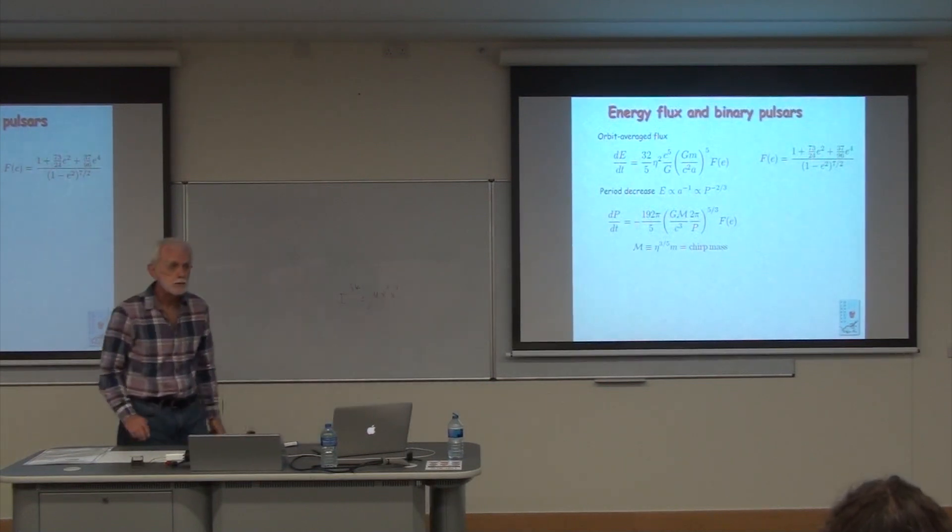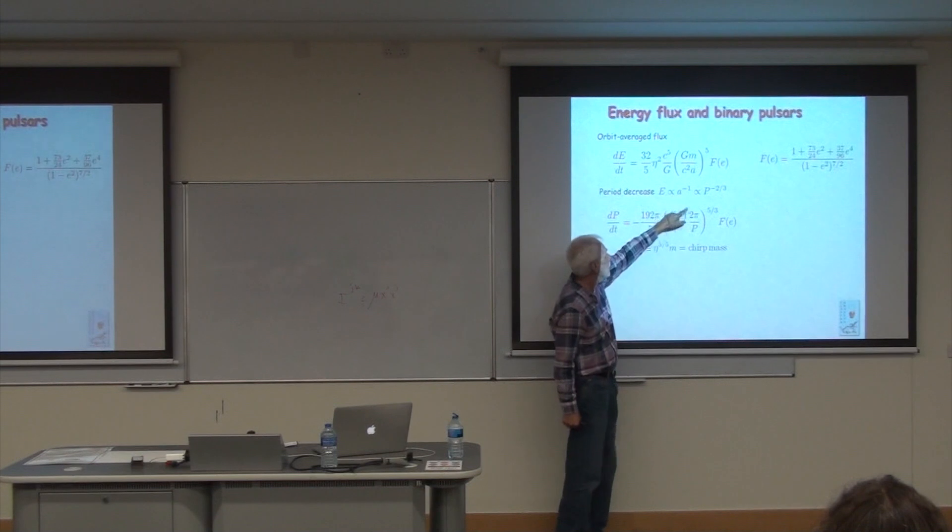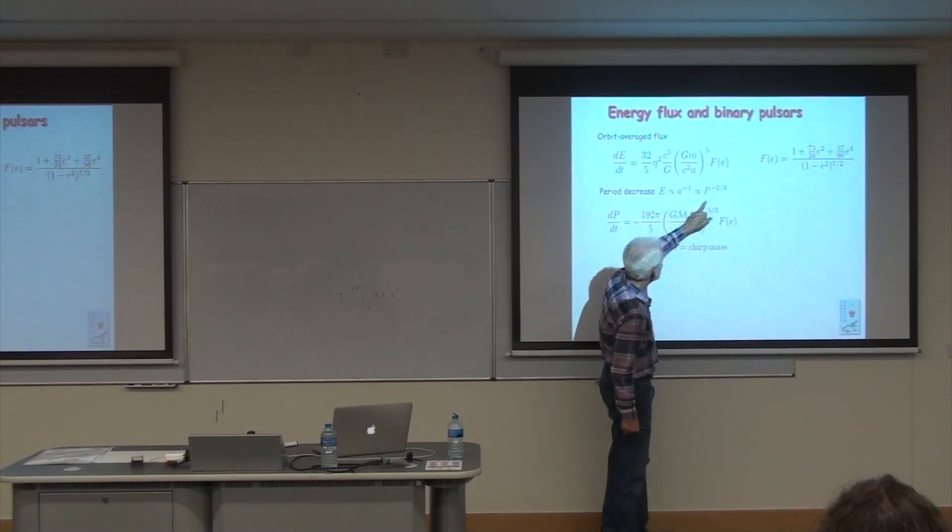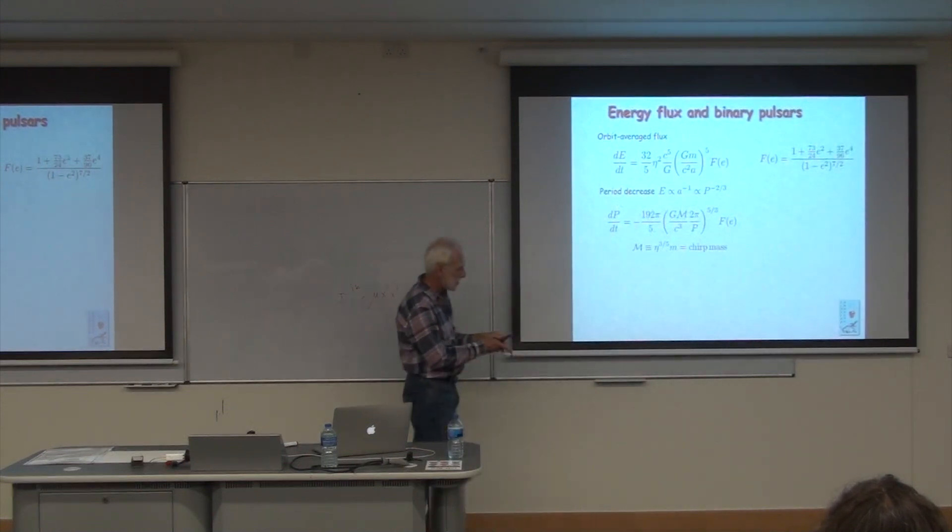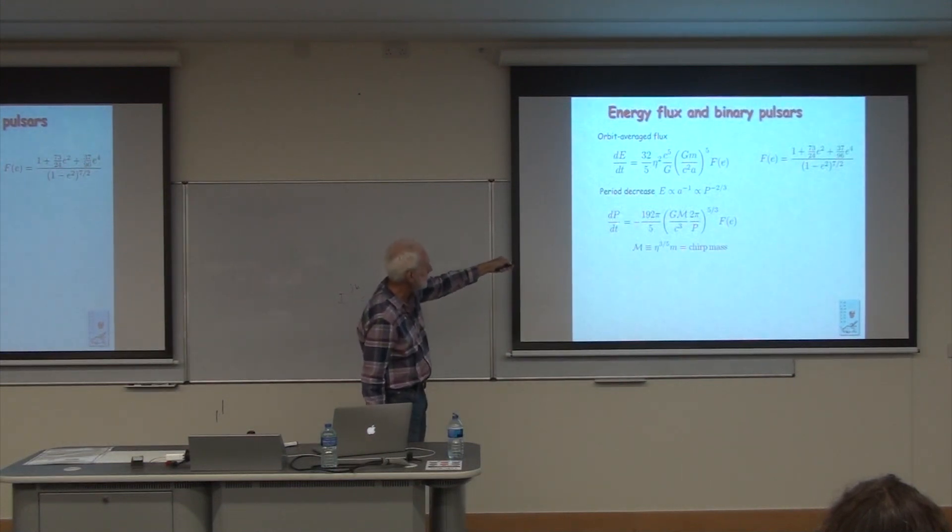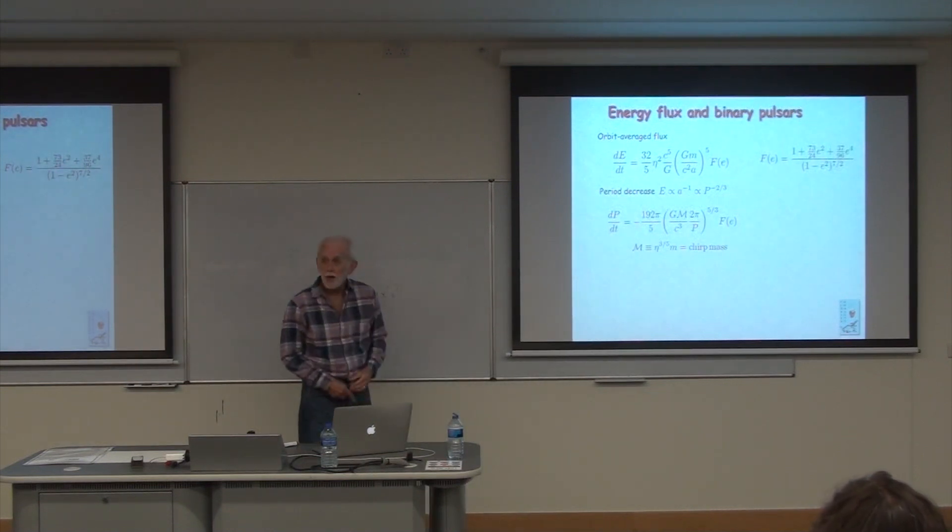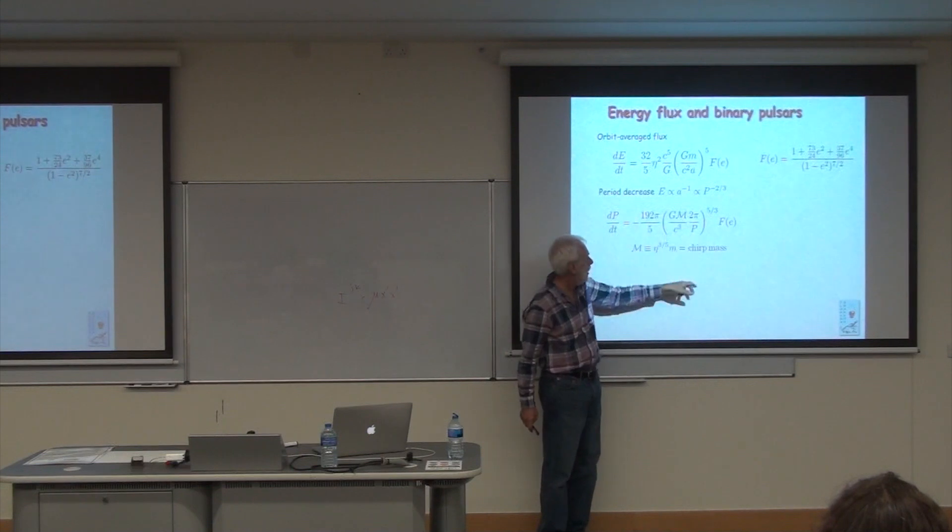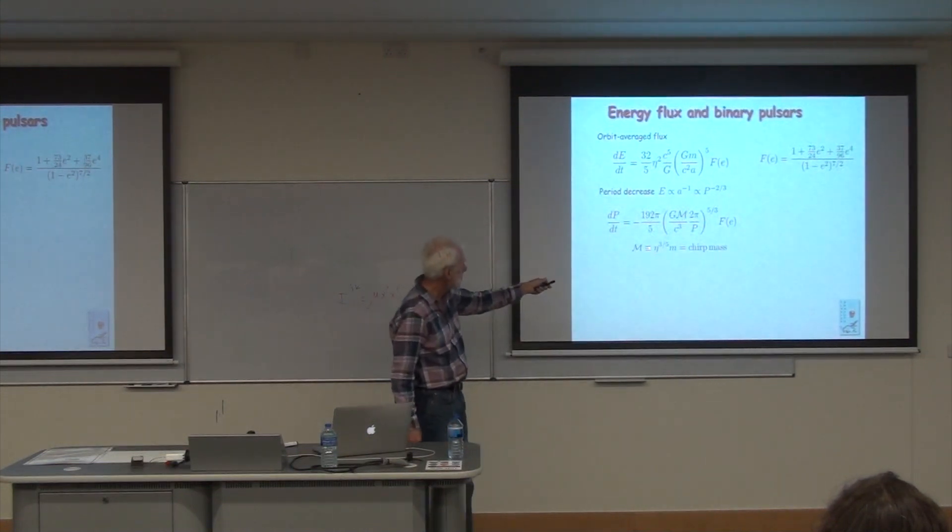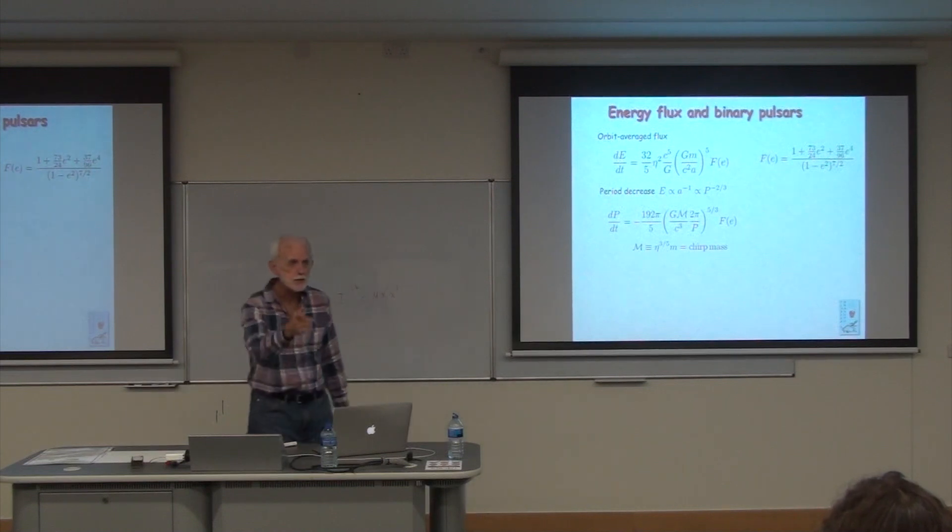This change of energy will induce a decrease of the orbital period. Remember, energy at Newtonian order is proportional to 1 over a, and we know that a is proportional to p to the two-thirds, so there's a direct link between e, energy, and orbital period. You can convert this expression into dp dt, the rate of change of orbital period, expressed in terms of orbital period. You can eliminate a using its connection to the orbital period. When you do that, you get a formula that depends on p to the five-thirds, and then there's a specific mass that appears here, and that mass is called the chirp mass. It's mu to the three-fifths times m, and that's the famous chirp mass that you hear about in inspiraling binaries.